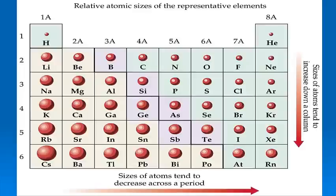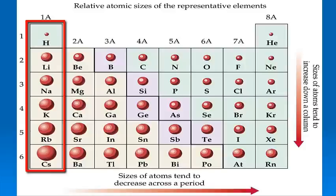If you look at this, this is basically the main group elements, not the transition metals. Just the main group elements. And a little picture depicting the relative size of the atoms. And you can see that as you go down a group from the top, say hydrogen, down to lithium, sodium, potassium, rubidium, and cesium,